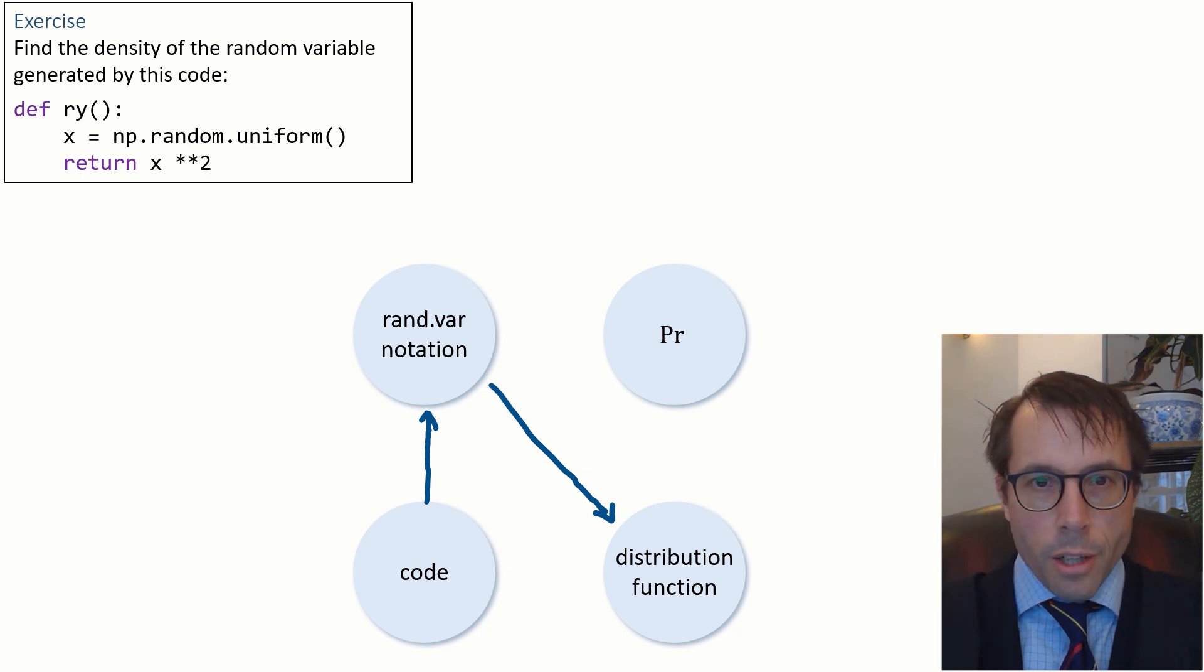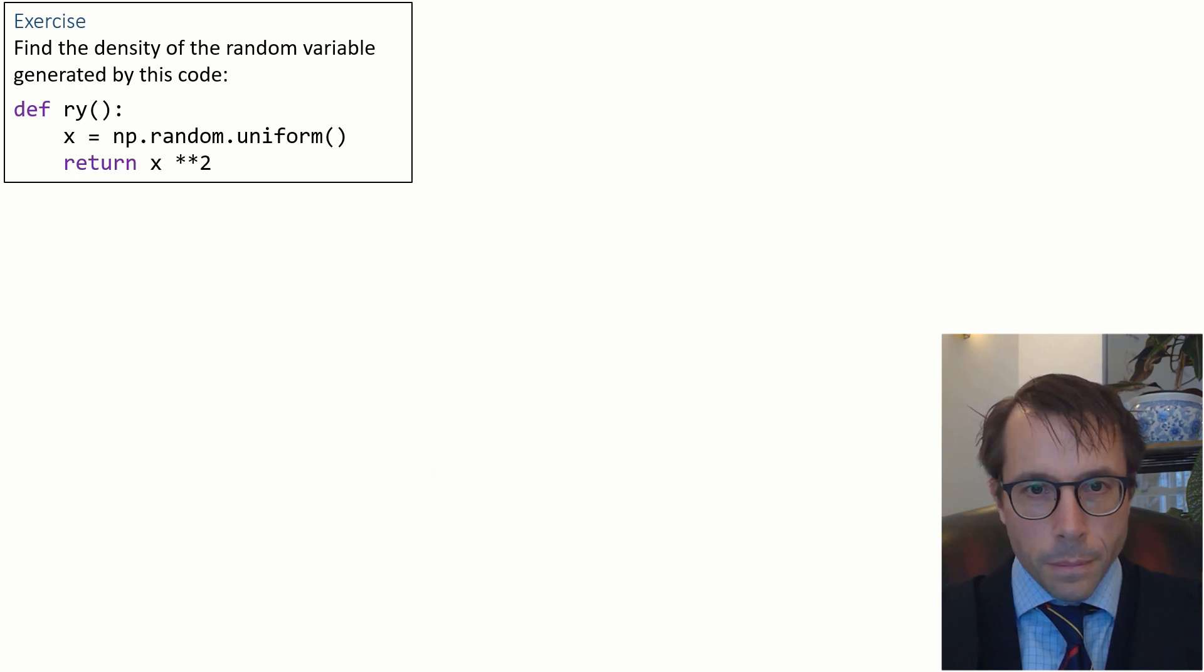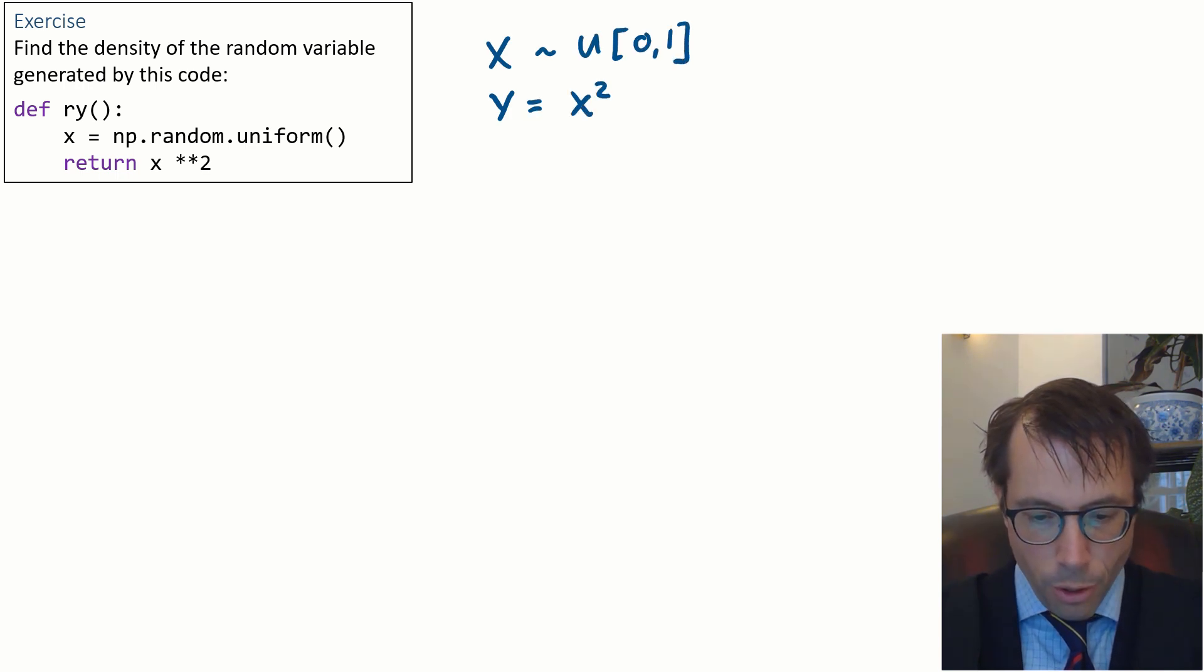So let's go ahead and do it for this particular problem. First, I'll write it out in math notation. X is a uniform [0,1] random variable, Y equals x squared.